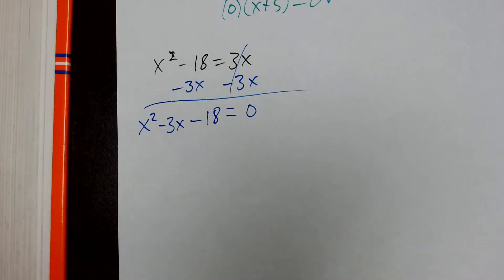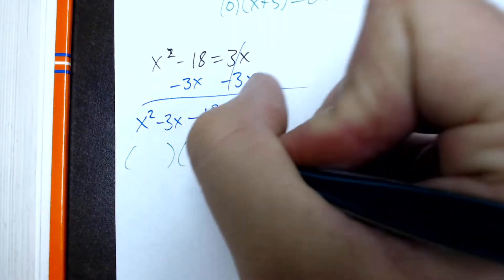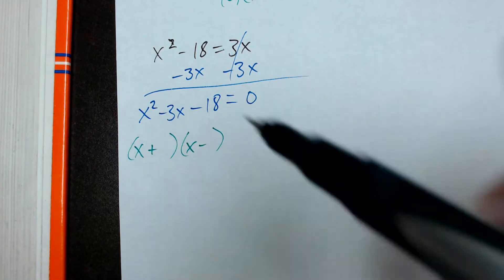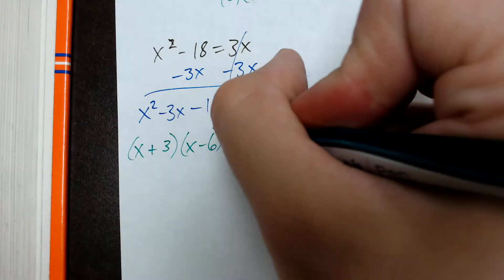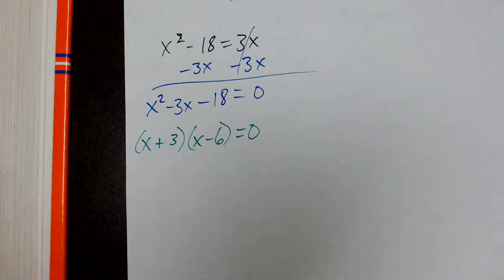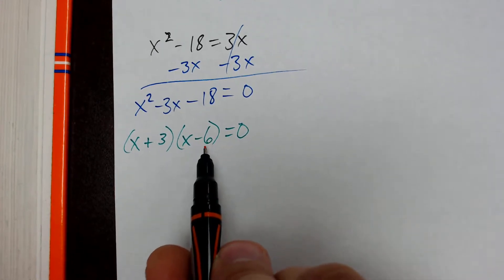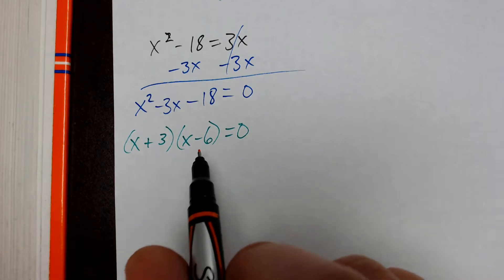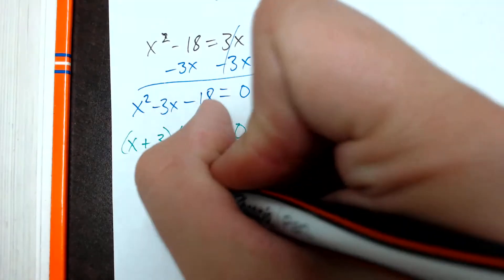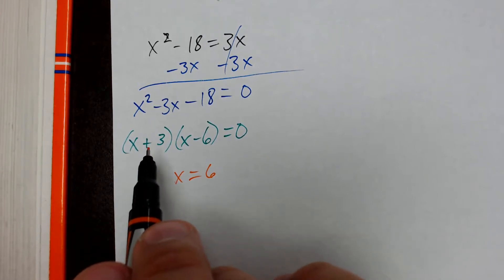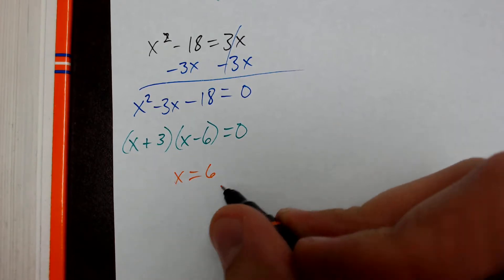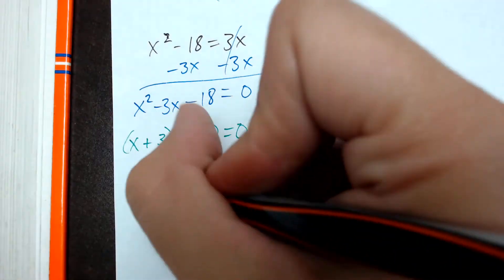These look familiar because we've been factoring them for the last few weeks. I can factor this quadratic into x and x. The last sign being negative means one factor is positive and one is negative: x plus and x minus. Factors of 18 that add up to negative 3 are 3 and 6 — specifically negative 6 and positive 3, since negative 6 plus positive 3 equals negative 3. So we have x minus 6 times x plus 3 equals zero. Applying Zero Factor Theorem: x equals 6, or x equals negative 3.